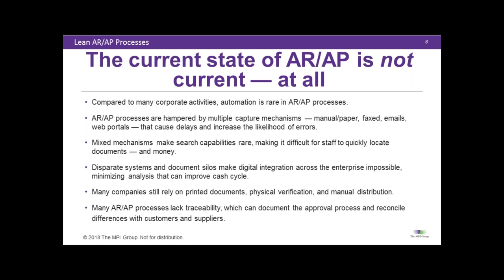When data arrives in many formats without being combined, it is very rare for companies — especially those not of massive scale — to have search capabilities. That is a real problem when you're trying to pay a bill or get a bill paid and need documentation. So many different departments touch AR and AP — finance, supply chain, et cetera — that digital integration is all but impossible because of the different formats. Companies still relying on paper invoices and purchase orders face slow processing, and because there's no search capability and no automated alerts, traceability is often a very difficult problem, which leads to direct losses of cash.